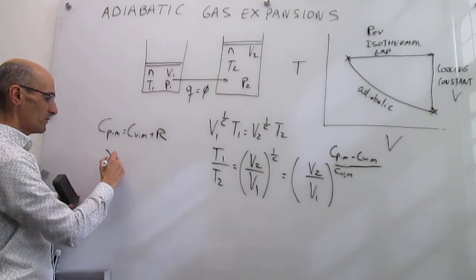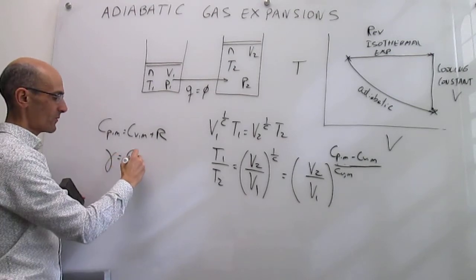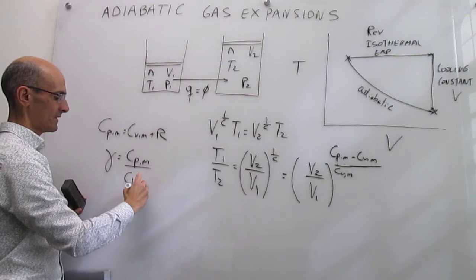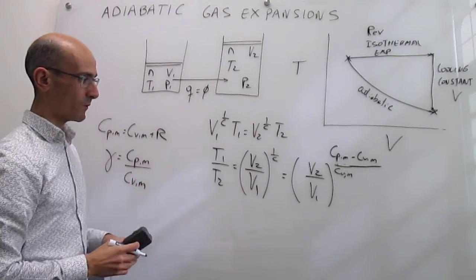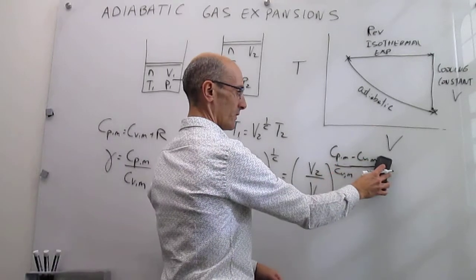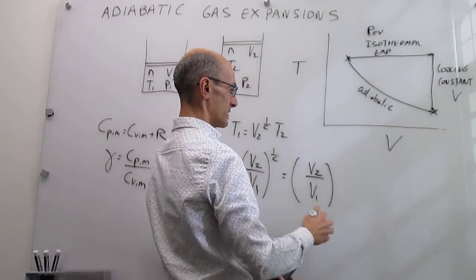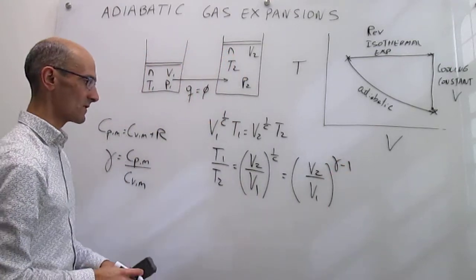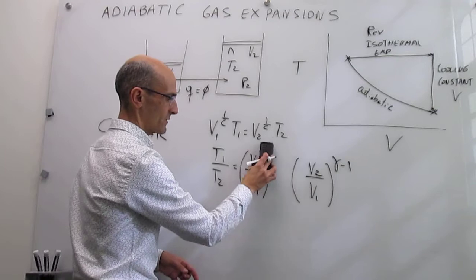We can define a new term that is going to be equal to gamma, which is just the ratio of the heat capacities: C_Pm over C_Vm. When we do that, notice that you will have here gamma minus 1. All of that exponent simply turns into gamma minus 1. This looks like a fairly useful expression right here.